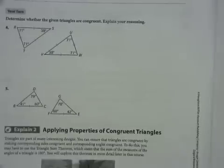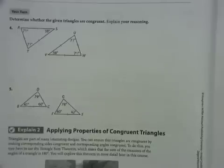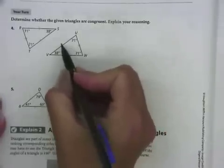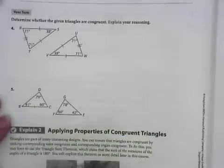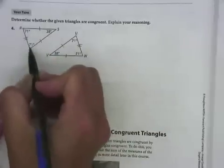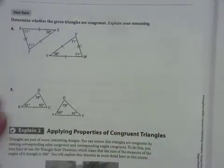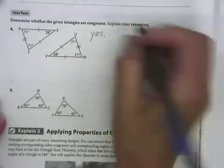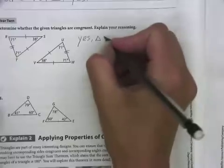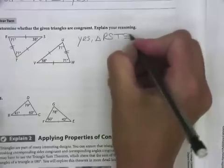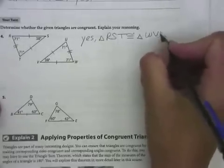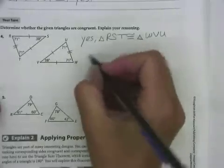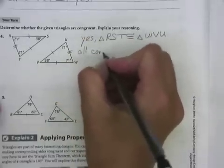In Your Turn 4, we're determining whether the given triangles are congruent. They didn't give us segment lengths, but they gave us markings. These two sides are congruent to these two sides, this side is congruent to this side, these two angles are congruent to these two angles, and this angle is congruent to that angle. So yes, the triangles are congruent. Triangle RST is congruent to triangle WVU — it's very important to name things in order of their corresponding parts. The explanation is that all corresponding parts are congruent.